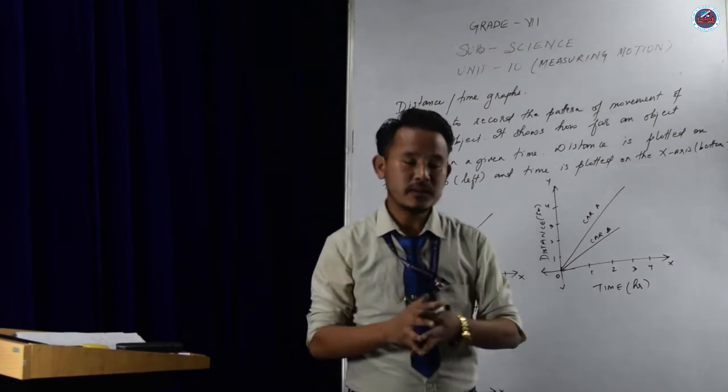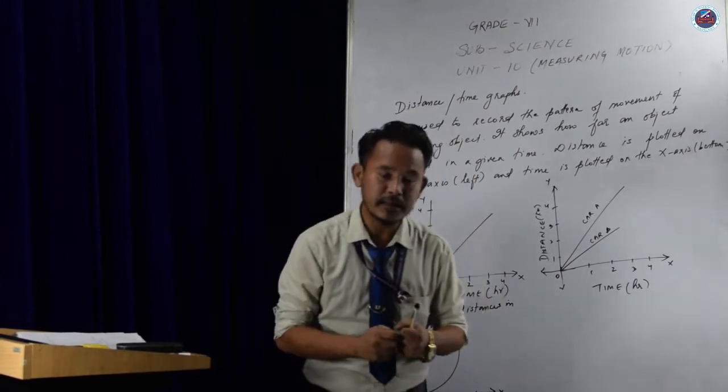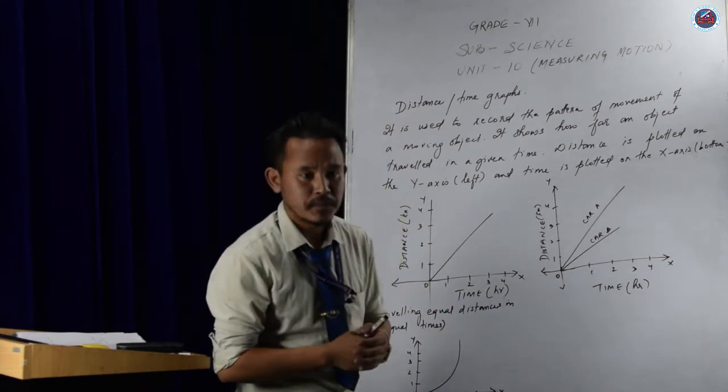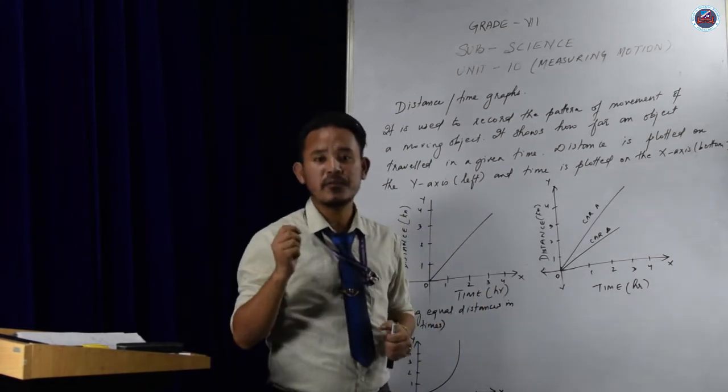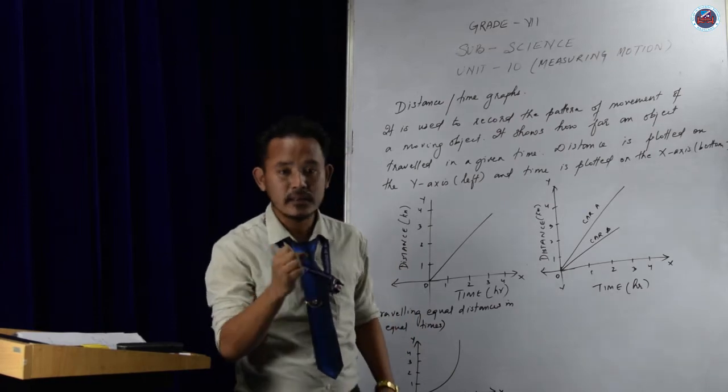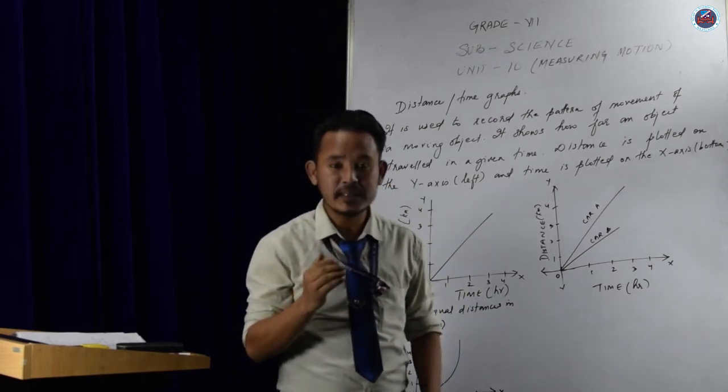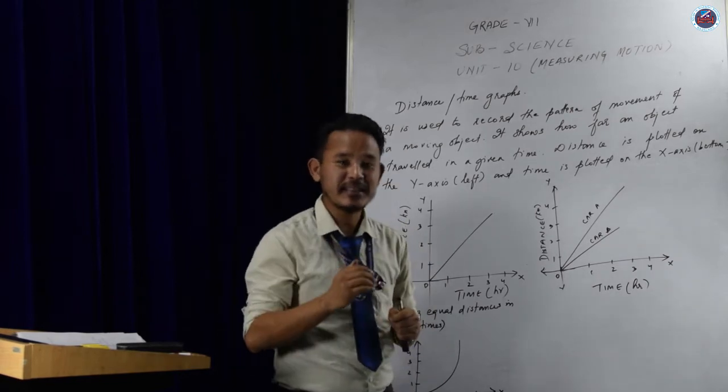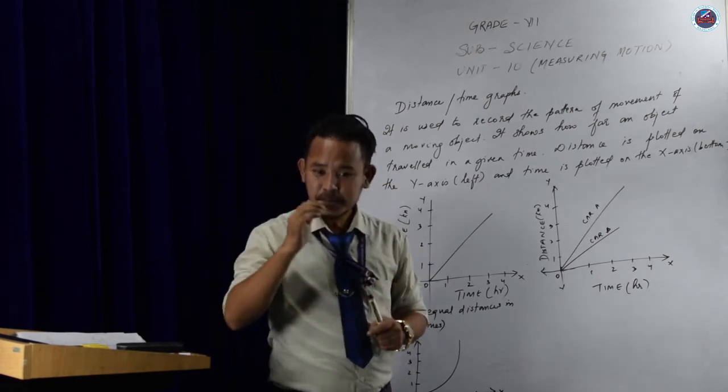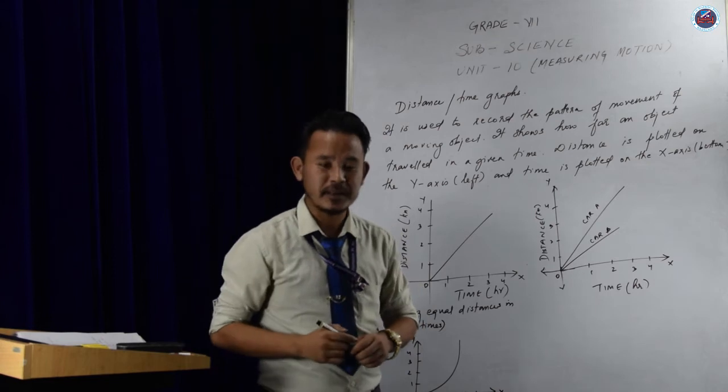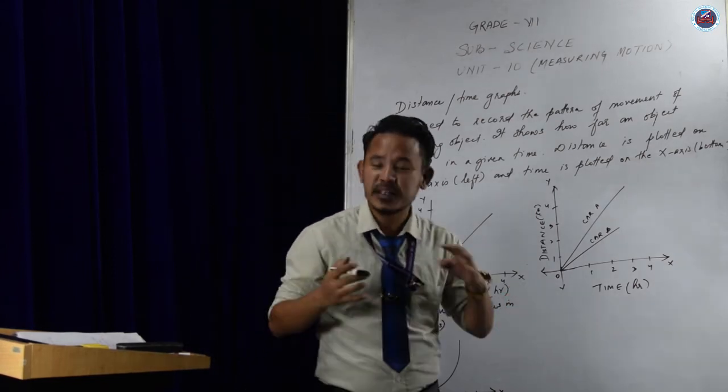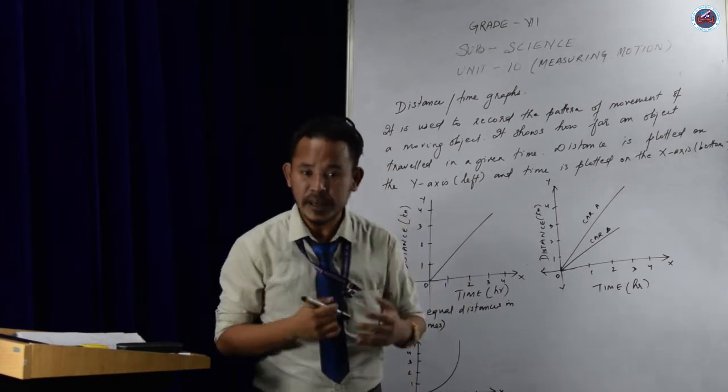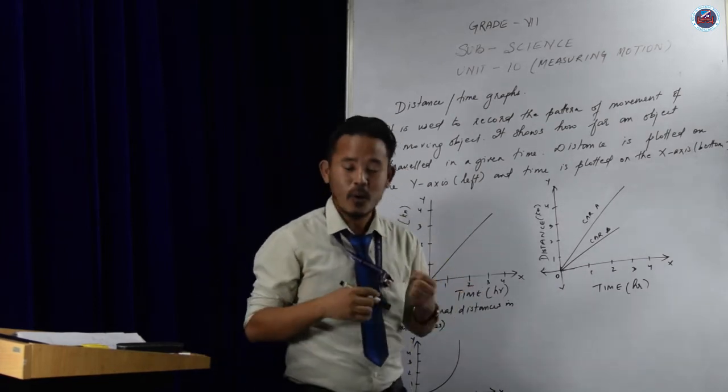So next, let's learn about constant speed and the changing speed. What actually do we mean by constant speed? Constant speed means when the speed of an object remains the same, that is its speed does not increase or decrease, it remains the same. We say it is moving at a constant speed. Whereas changing speed, when the speed of an object does not remain constant, that means it keeps on changing, either increases or decreases.